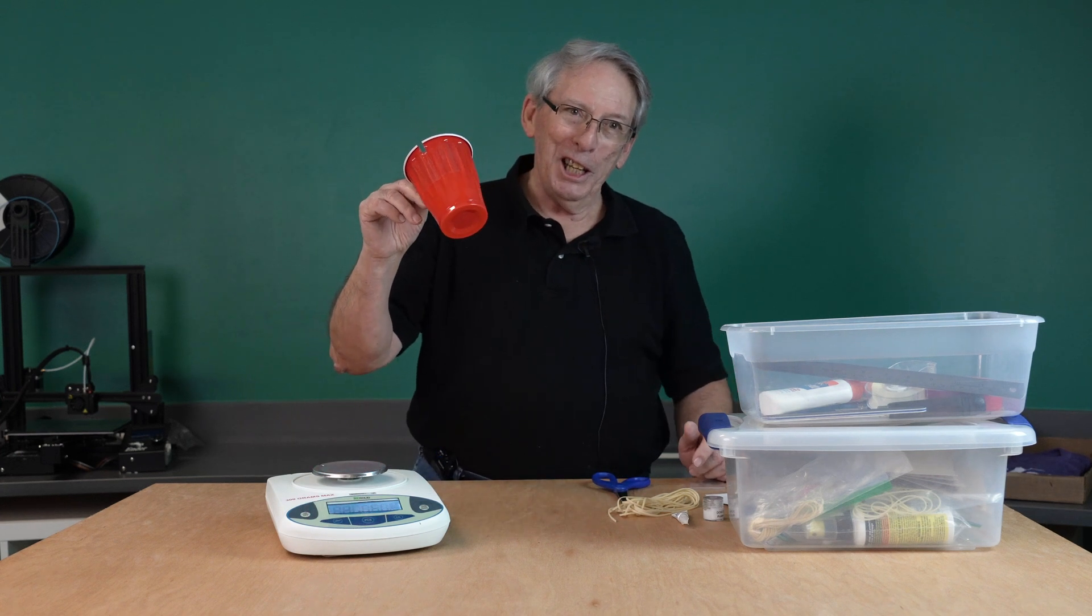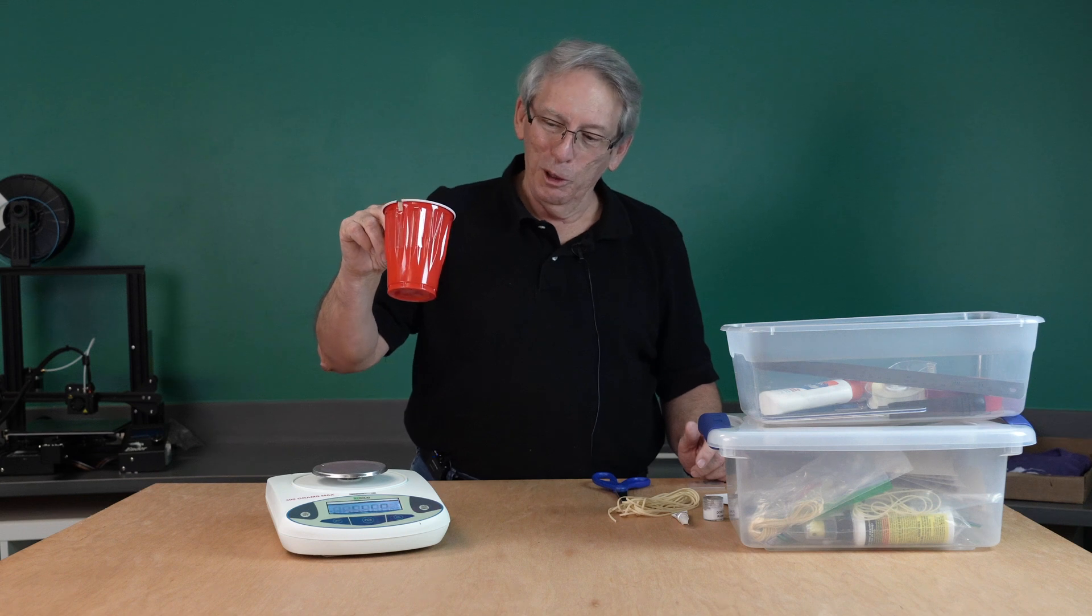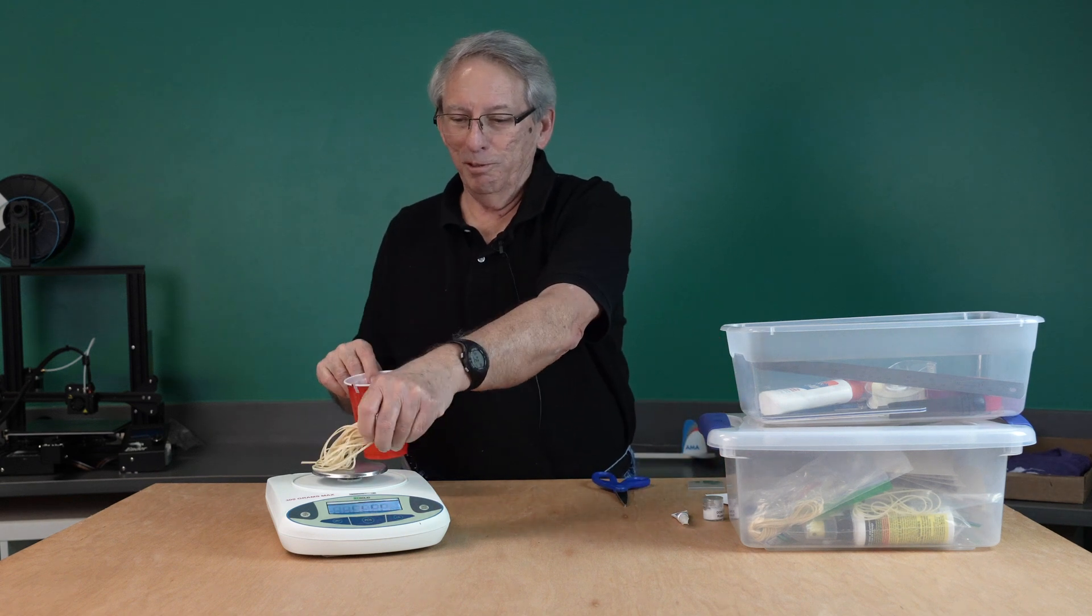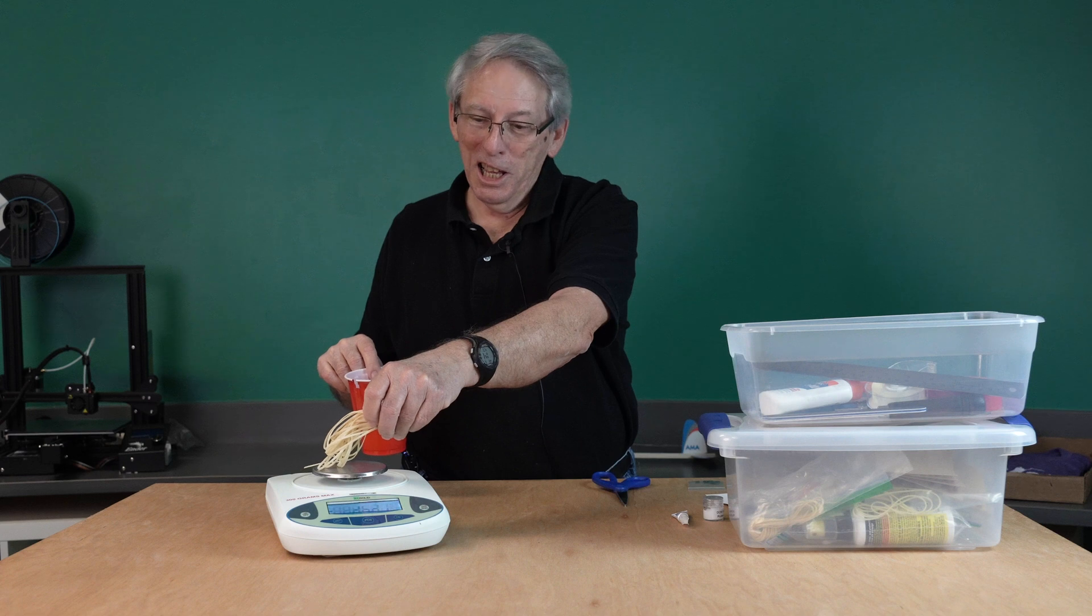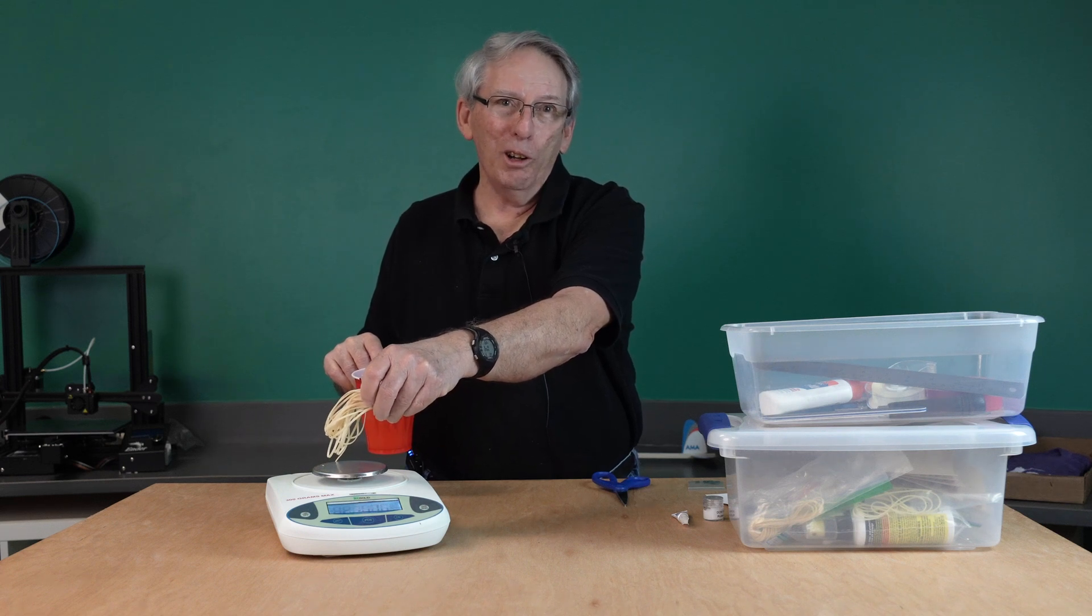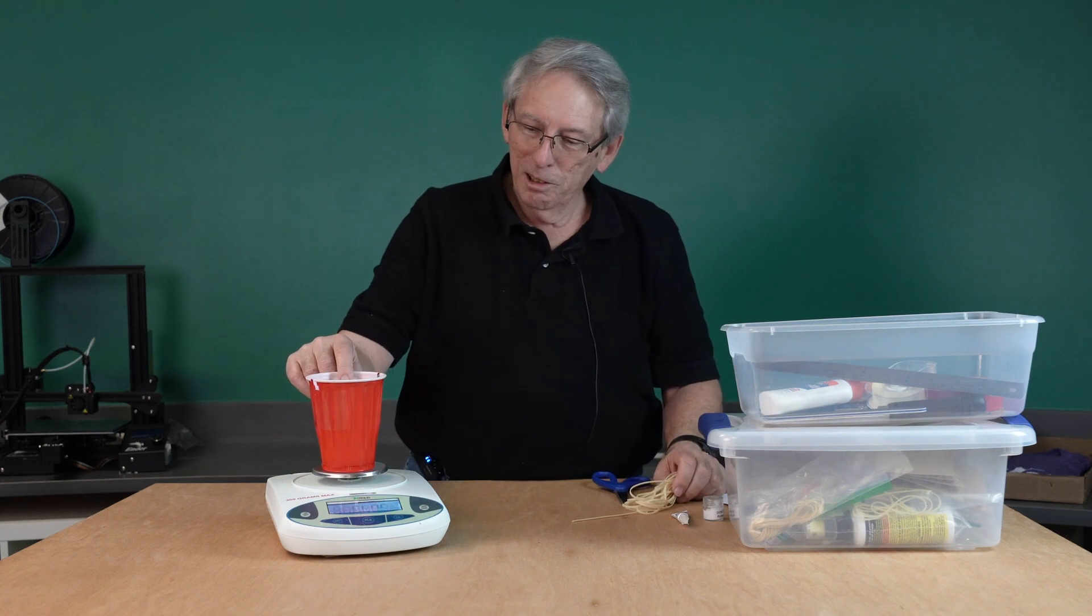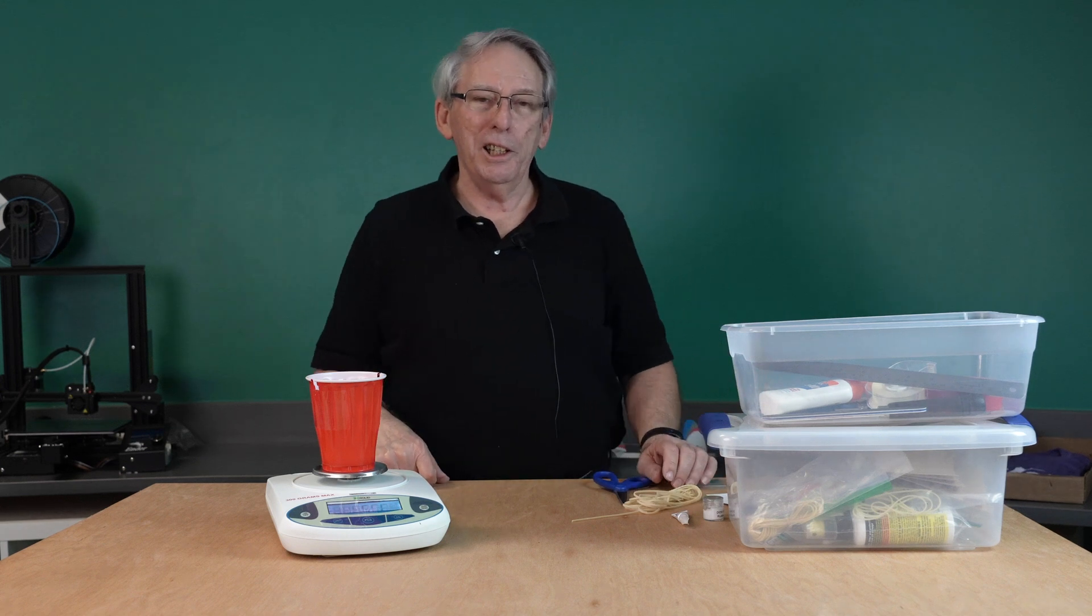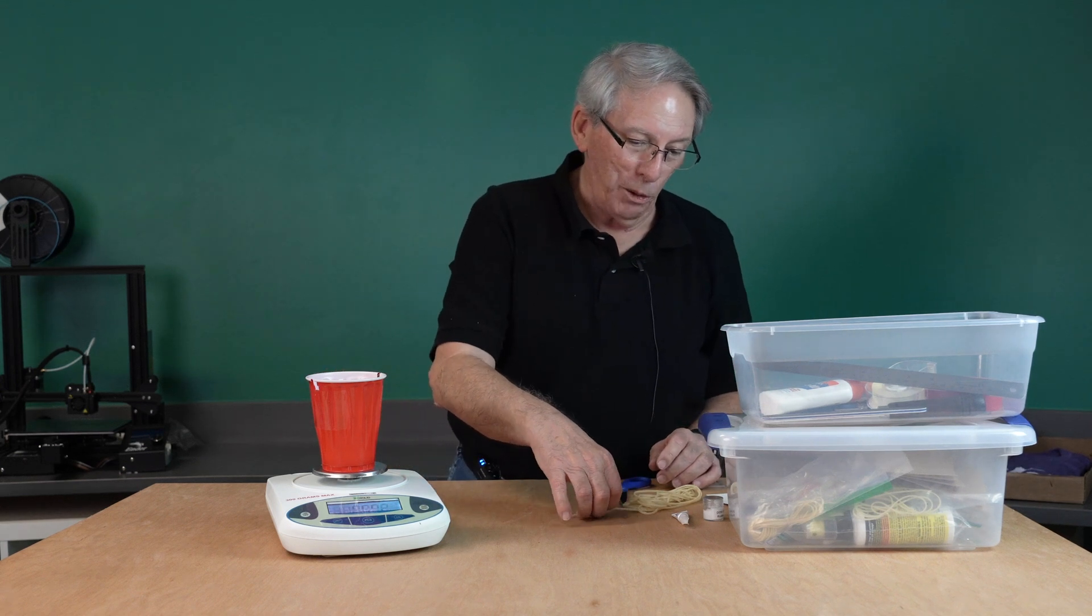You need a container to hold the rubber motor. Believe me, if you try to put rubber freehand on this tray, it's going to fall all over everything. So the plastic cup makes a good container to hold the rubber while you try to weigh it out.